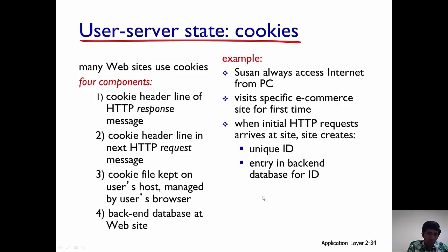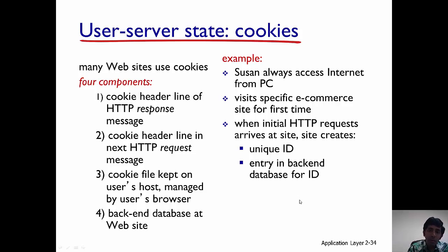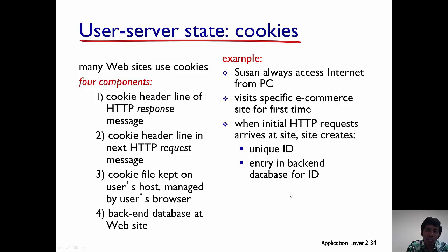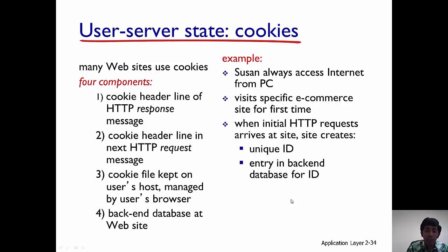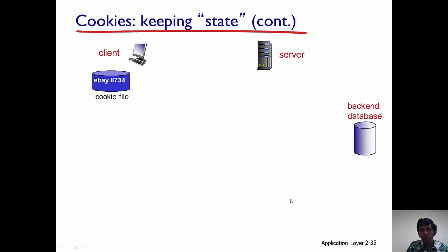Let's look at a concrete example. Susan always accesses the internet through a PC and she visits an e-commerce website, say amazon.com, for the first time. When she sends her initial HTTP request and it arrives at amazon.com, Amazon is going to create a unique ID and send it back in the HTTP response message, and an entry is going to be created at the back-end database for that particular ID.